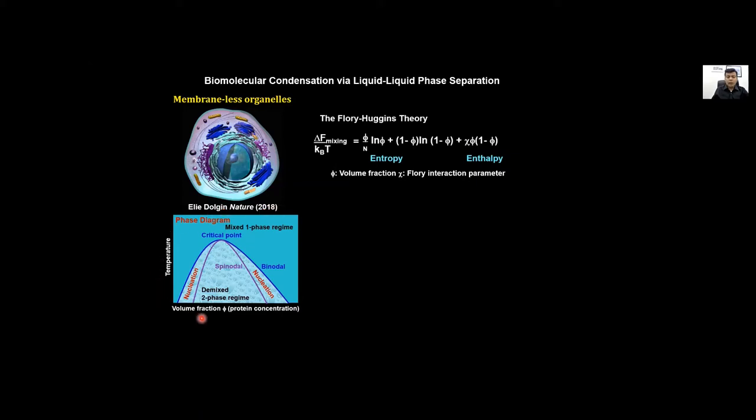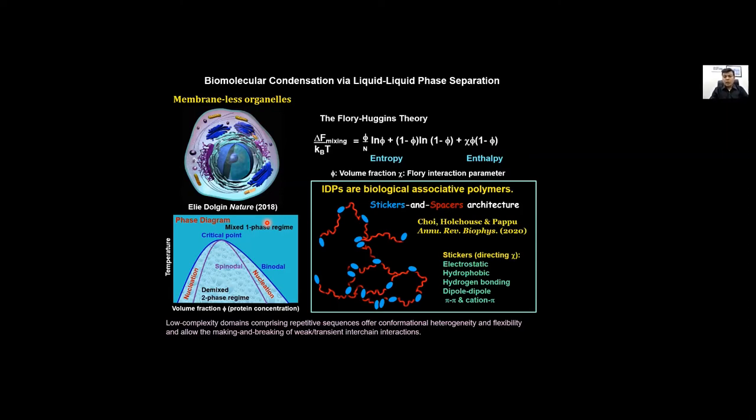Shown here is a schematic of a phase diagram. Intrinsically disordered proteins are essentially biological associative polymers having stickers-and-spacers architectures. Sticker residues can promote transient interactions, whereas spacer residues interspersed between the stickers modulate the making and breaking of these interactions, giving rise to the liquid-like highly dynamic nature of this condensate.